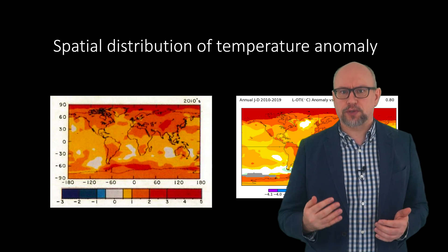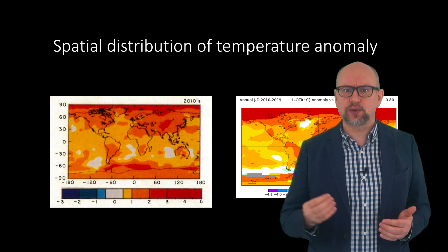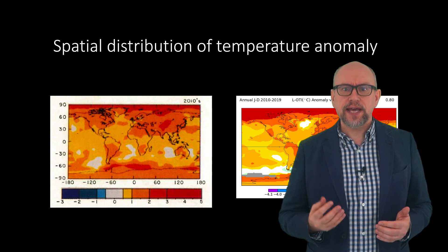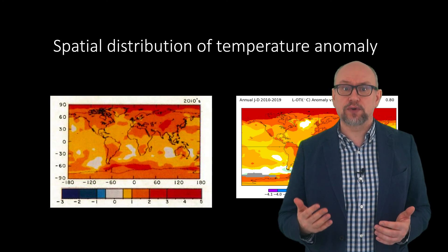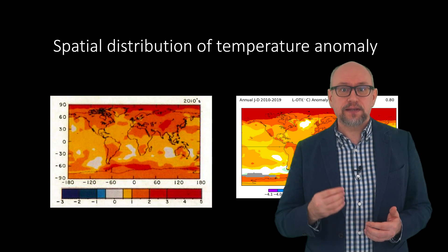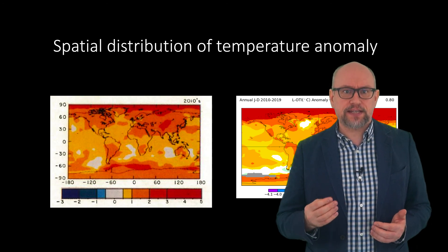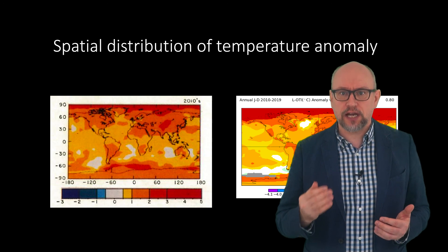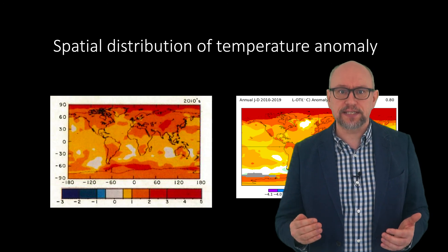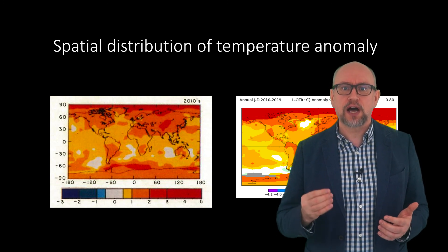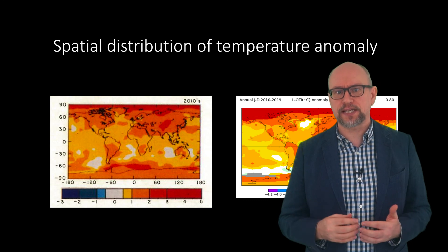Modern climate models have a grid resolution of a degree or less, whereas Hansen's model had a far coarser grid of 8 degrees by 10 degrees. Given the effect that grids have on the need to parameterise climate processes, we can understand the source of Hansen's model's high climate sensitivity.